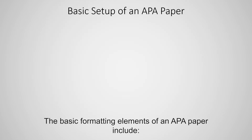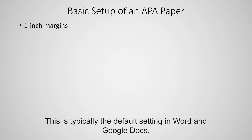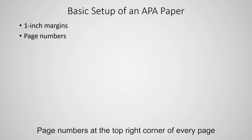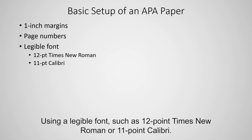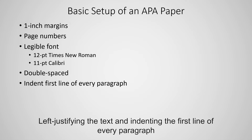The basic formatting elements of an APA paper include 1 inch margins on all sides of the page — typically the default setting in Word and Google Docs — page numbers at the top right corner of every page, using a legible font such as 12 point Times New Roman or 11 point Calibri, double spacing the entire paper without adding extra spaces between paragraphs or reference entries, and left justifying the text and indenting the first line of every paragraph.